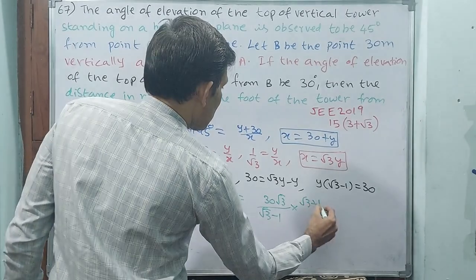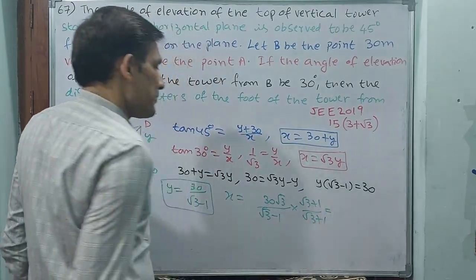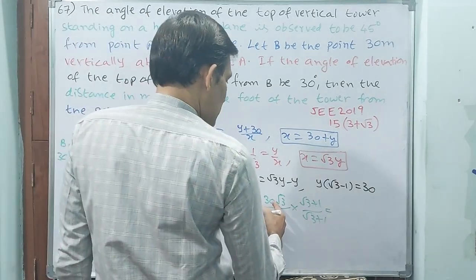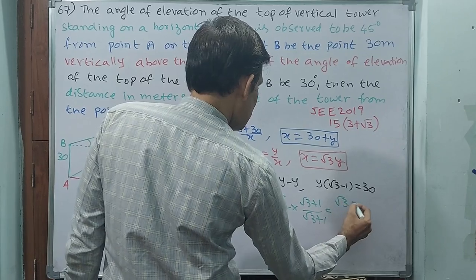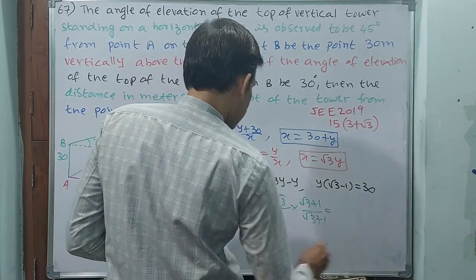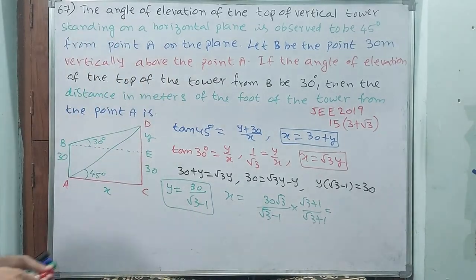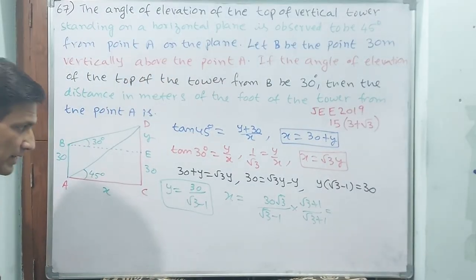So actually this is your answer, but you rationalize it. Multiply by (√3+1)/(√3+1). We have 30√3/(√3-1).